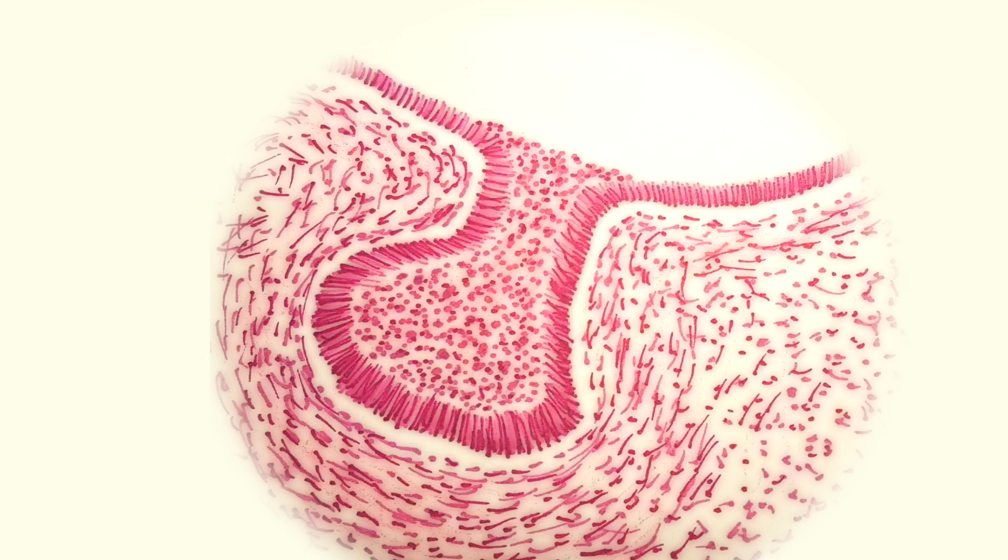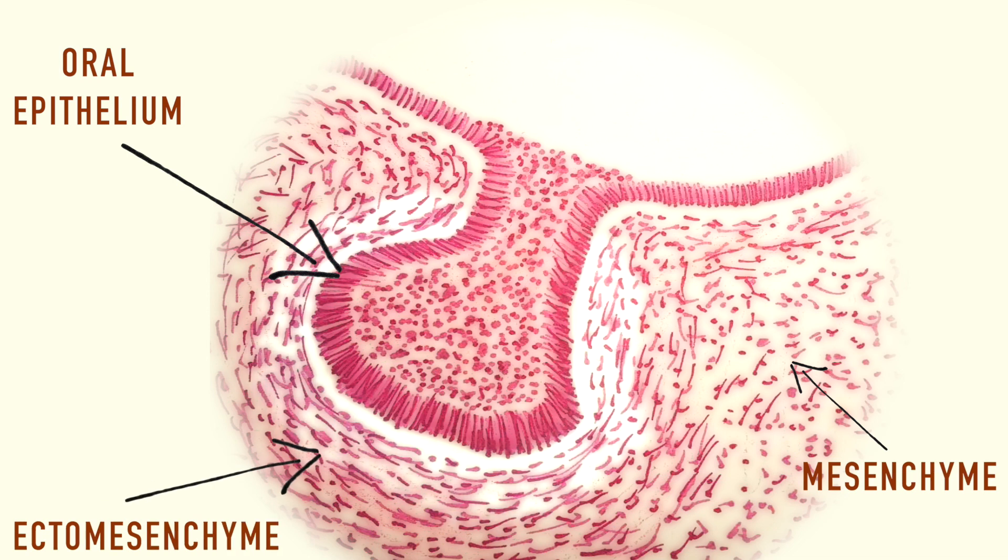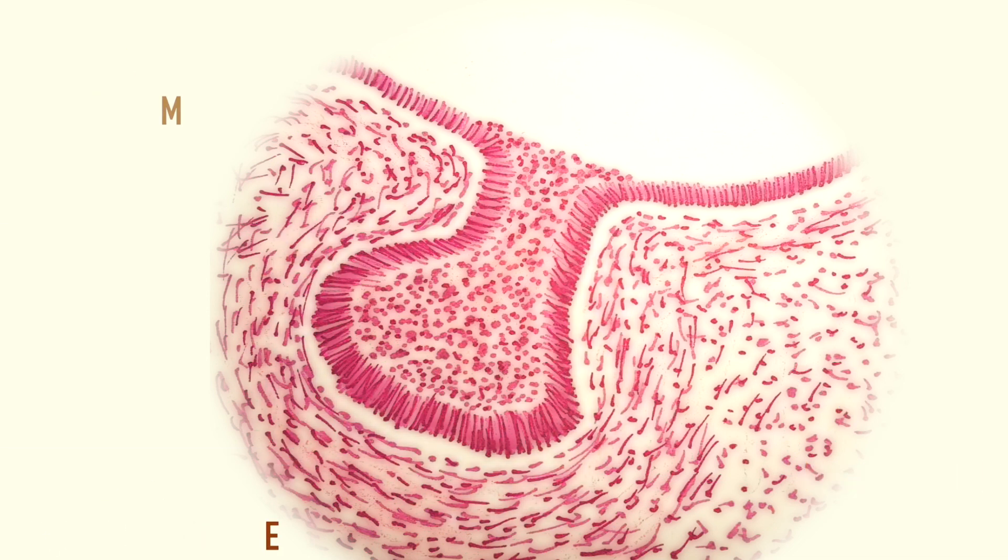The bud stage begins in the sixth week in utero and is the first interaction between the oral epithelium and the mesenchyme to form the ectomesenchyme. This stage marks the development of the primordia of the enamel organs, the tooth bud.